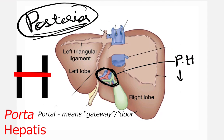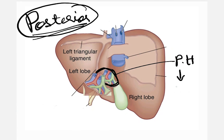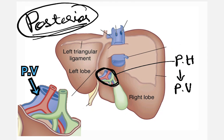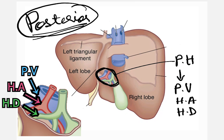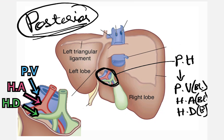The structures entering or leaving the liver through the porta hepatis include a large portal vein, a hepatic artery, and the hepatic ducts which carry bile. The hepatic artery carries oxygenated blood, while the portal vein carries deoxygenated blood coming from the intestine — usually filled with nutrients and all absorbed content going to the liver through the portal vein.